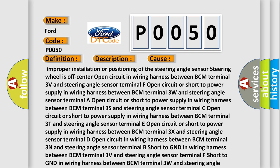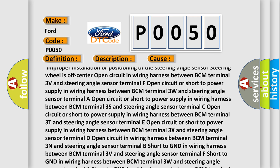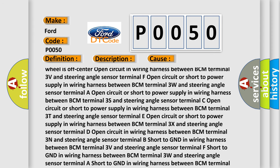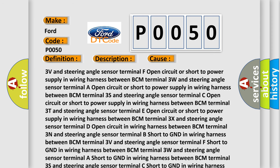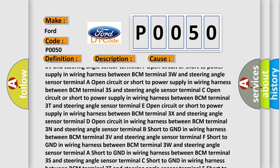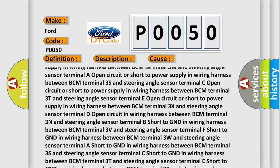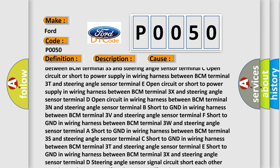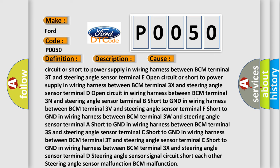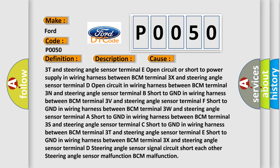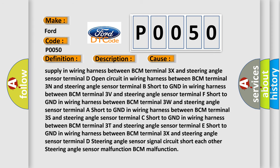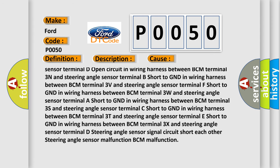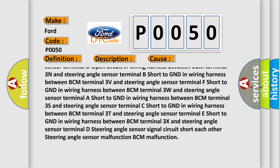Open circuit in wiring harness between BCM Terminal 3V and steering angle sensor terminal F. Open circuit or short to power supply in wiring harness between BCM Terminal 3W and steering angle sensor terminal. Open circuit or short to power supply in wiring harness between BCM Terminal 3S and steering angle sensor terminal C. Open circuit or short to power supply in wiring harness between BCM Terminal 3T and steering angle sensor terminal E. Open circuit or short to power supply in wiring harness between BCM Terminal 3X and steering angle sensor terminal D. Open circuit in wiring harness between BCM Terminal 3N and steering angle sensor terminal B. Short to GND in wiring harness between BCM Terminal 3V and steering angle sensor terminal F. Short to GND in wiring harness between BCM Terminal 3W and steering angle sensor terminal A. Short to GND in wiring harness between BCM Terminal 3S and steering angle sensor terminal C.